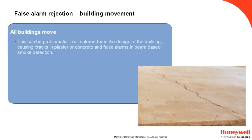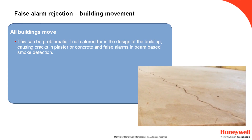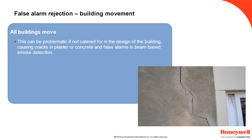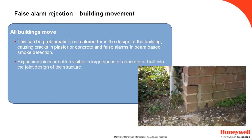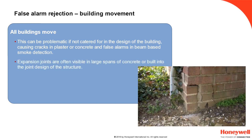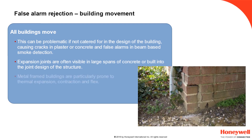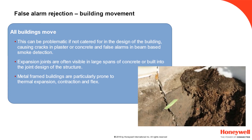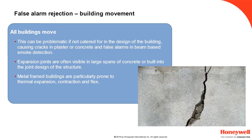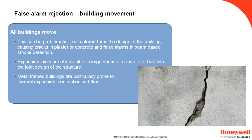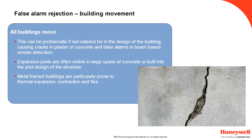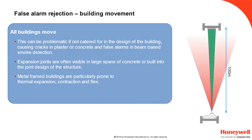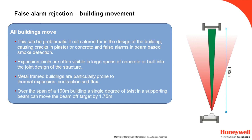False alarm rejection — building movement. Building movement is a major headache for traditional beam detectors. All buildings will be susceptible to movement, and most large buildings include expansion joints to account for this movement without stressing the fabric of the building. Metal-framed buildings, often used as the construction technique for factories and warehouses, are particularly prone to thermal expansion, contraction and twist. A small 1-degree twist in the roof beam to which the detector is mounted will move the centre point of the beam over 1.75 metres where it hits the reflector 100 metres away.